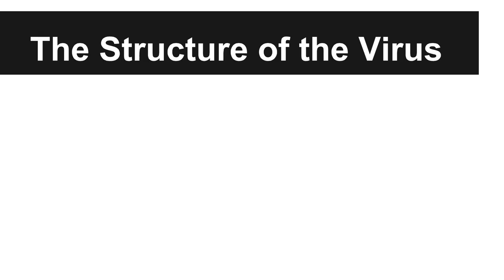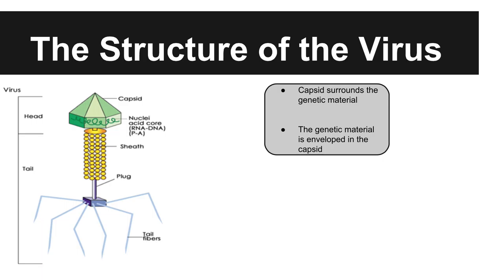The structure of the virus contains a nucleic acid which consists of either RNA or DNA, surrounded by a protein known as a capsid. Nucleic acid never consists of having both RNA and DNA at the same time.